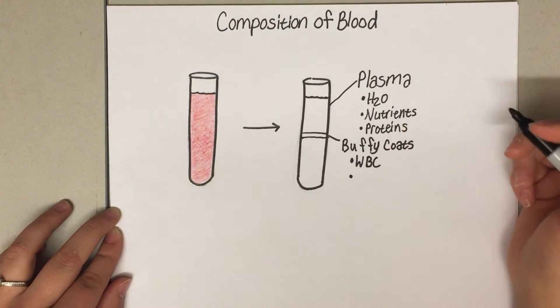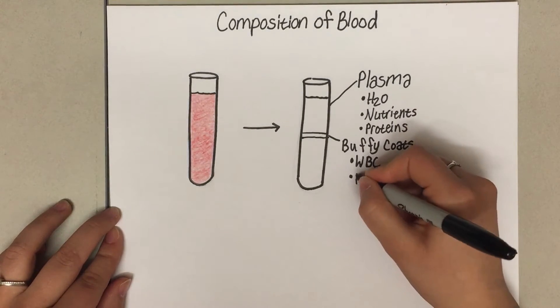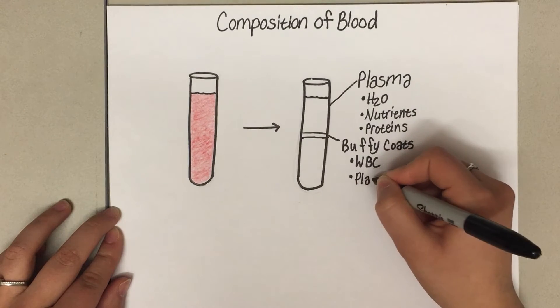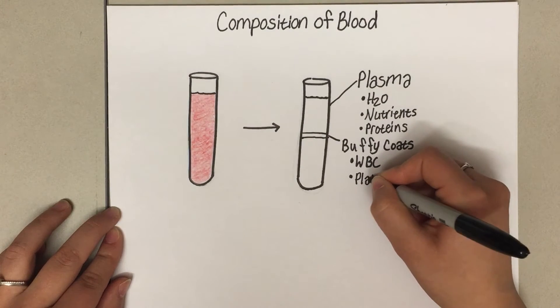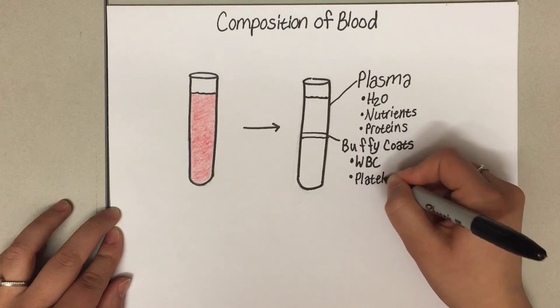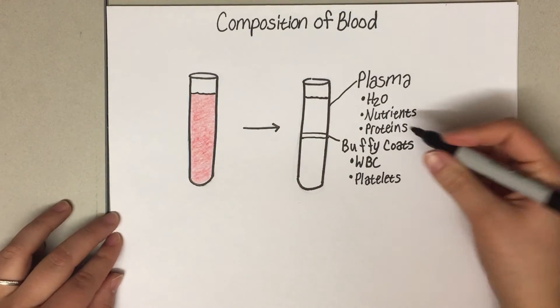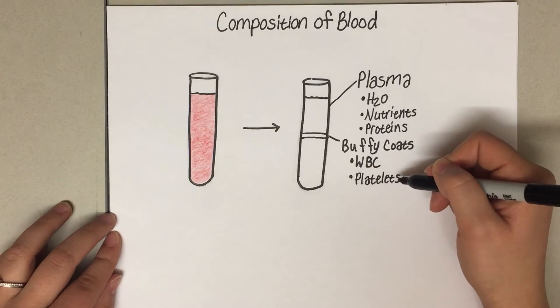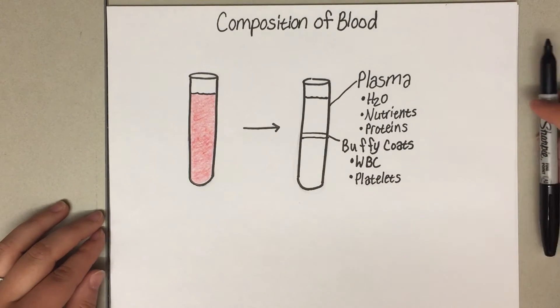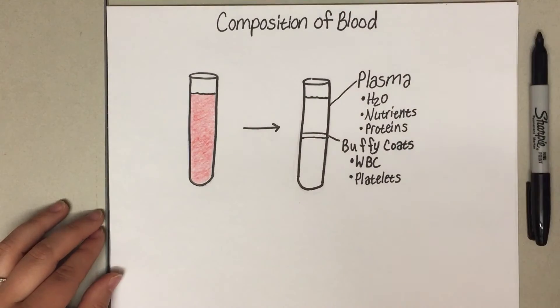White blood cells help with your immune response. These include cells such as neutrophils, basophils, monocytes, and lymphocytes. All of those are white blood cells that will help with inflammation and immunity. The buffy coat also contains platelets, which are also called thrombocytes, and these help with clot formation.